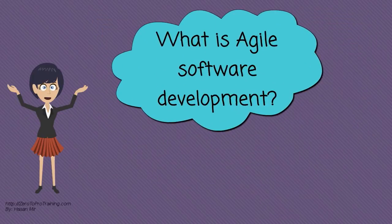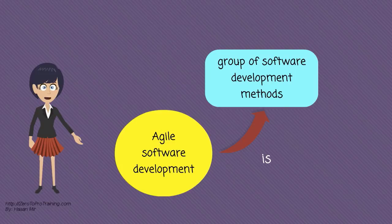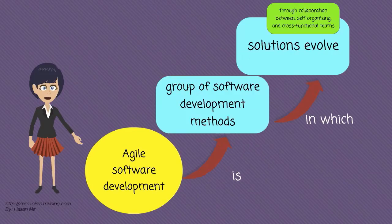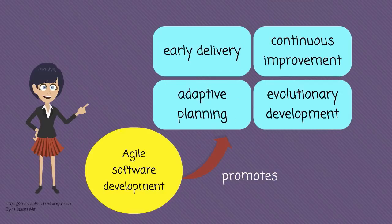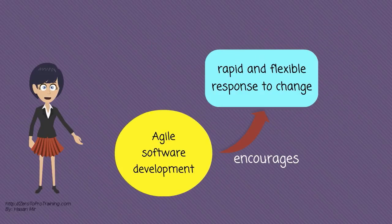What is Agile Software Development? It is a group of software development methods in which solutions evolve through collaboration between self-organizing and cross-functional teams. It promotes adaptive planning, evolutionary development, early delivery, and continuous improvement. It encourages rapid and flexible response to change.